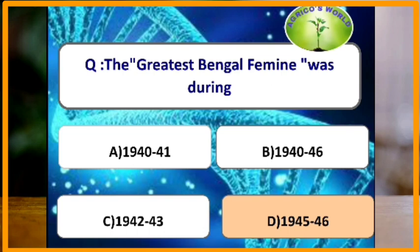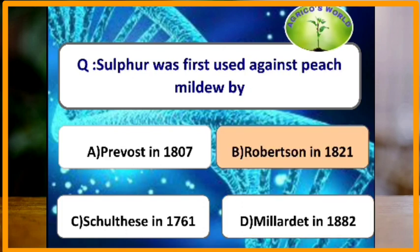The Bengal famine took place during the years 1945 to 1946. Sulfur was first used against peach mildew by which scientist? Sulfur was used against peach mildew by the scientist Robert Tune in the year 1821.